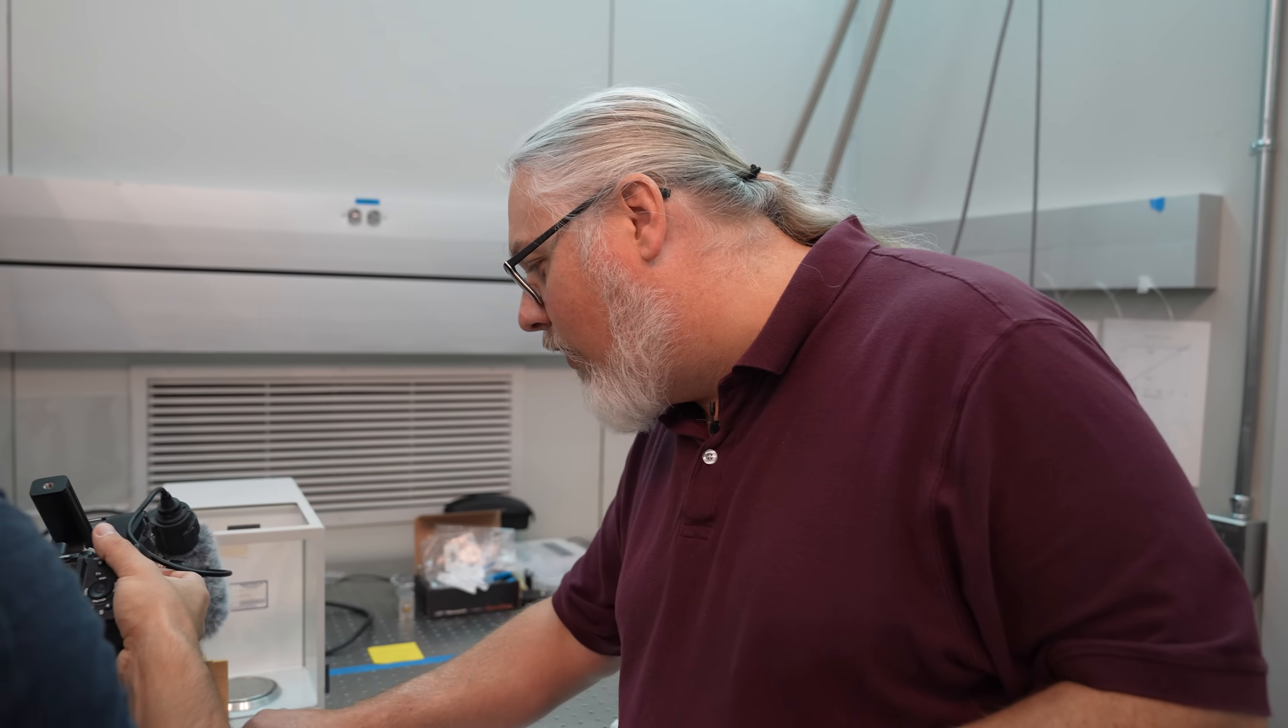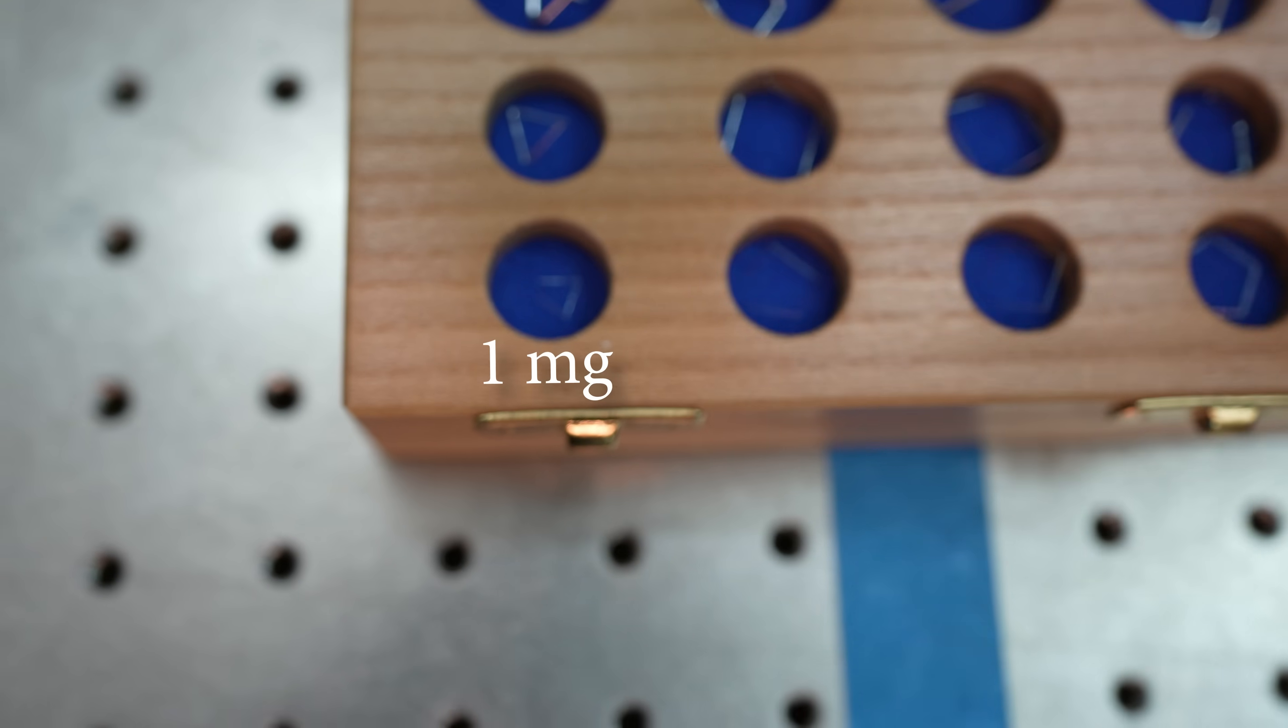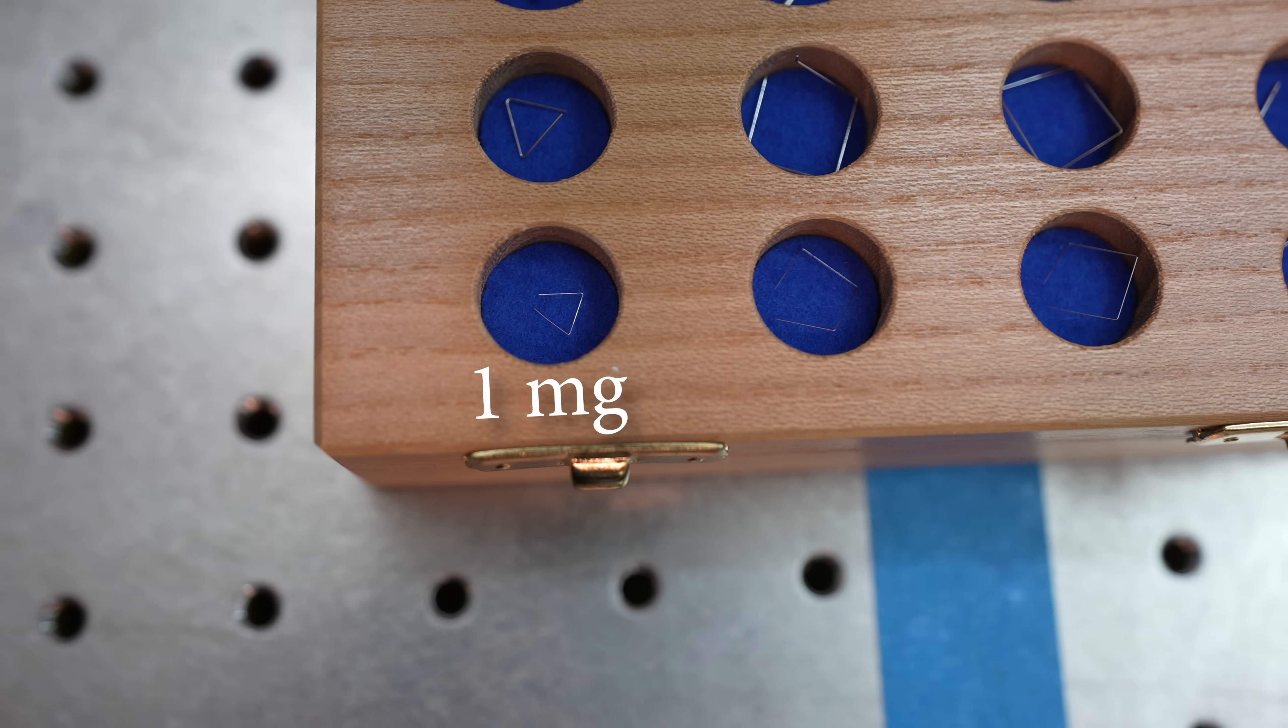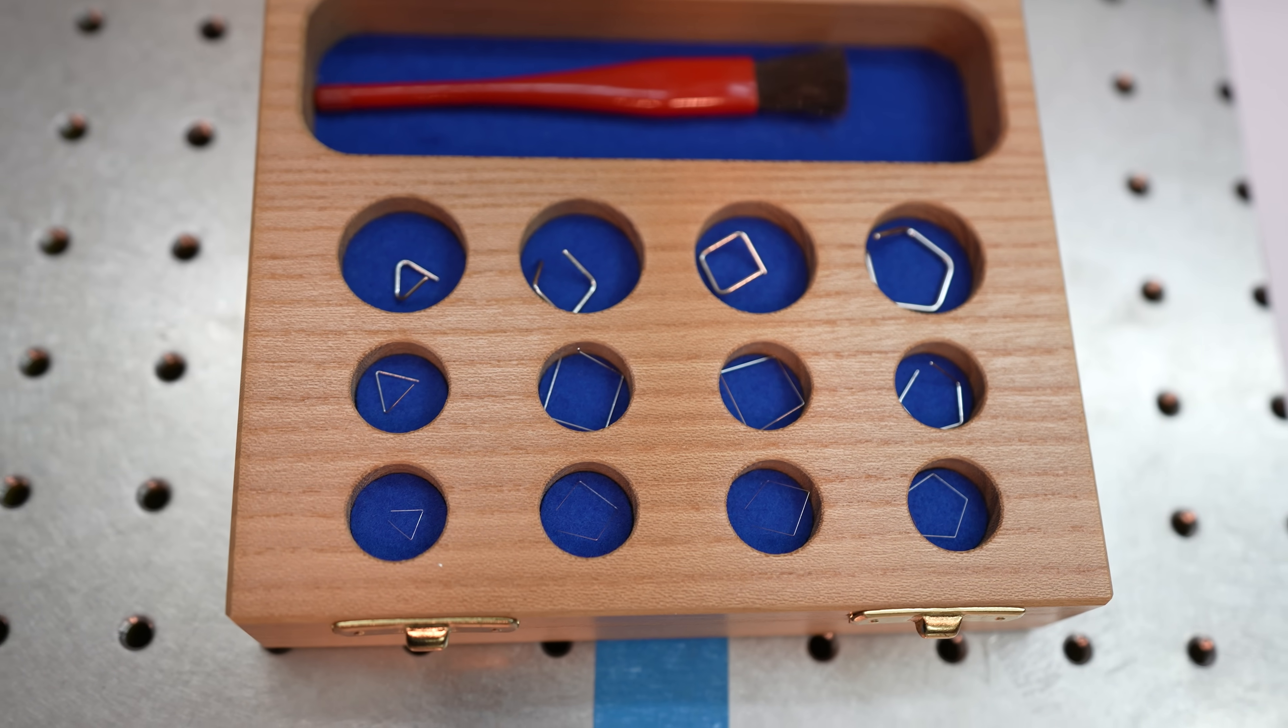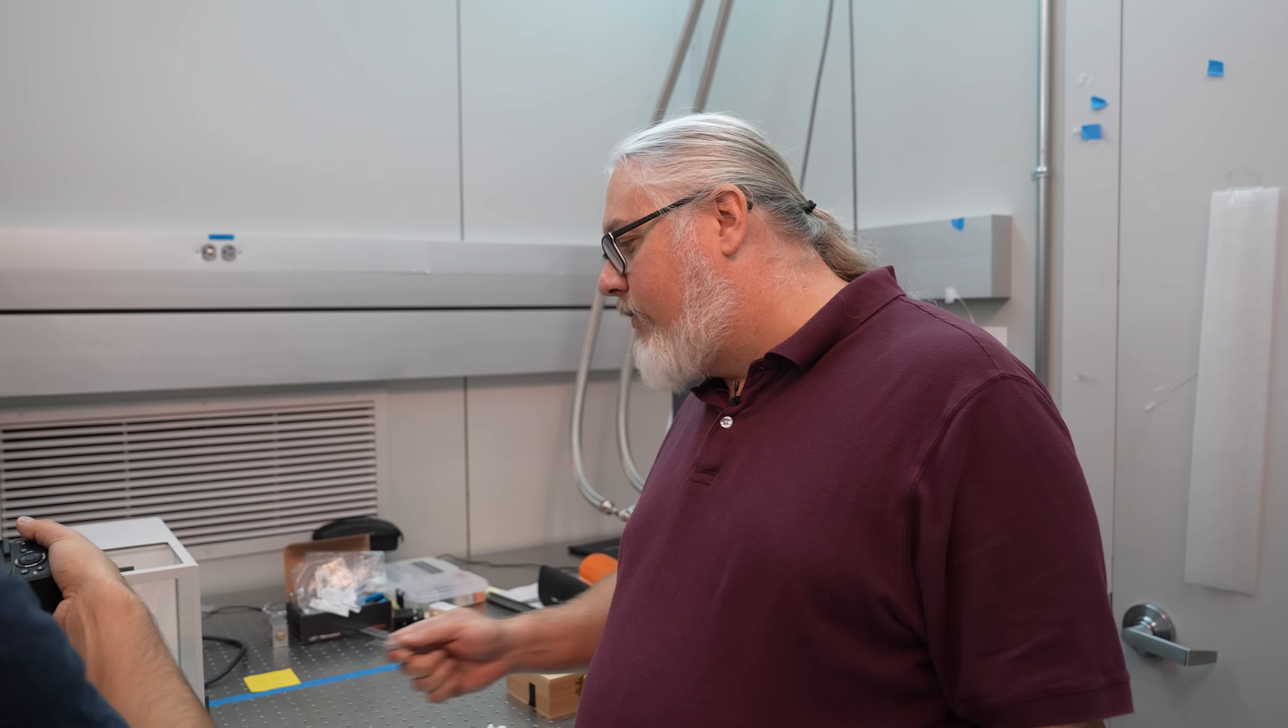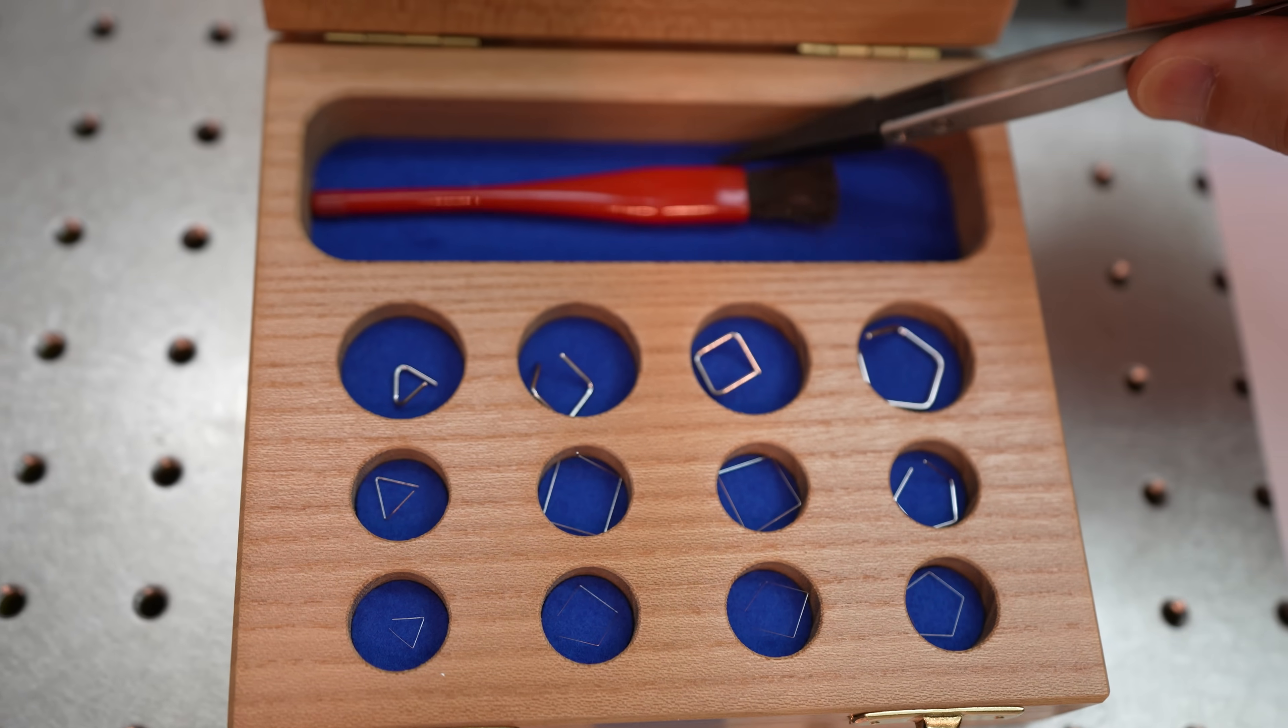The smallest we have here is down there. That's a milligram. That is a milligram. That is a little milligram right there. What are they made out of? These are made out of stainless steel. And we have to do things like you see this little lint-free brush here.